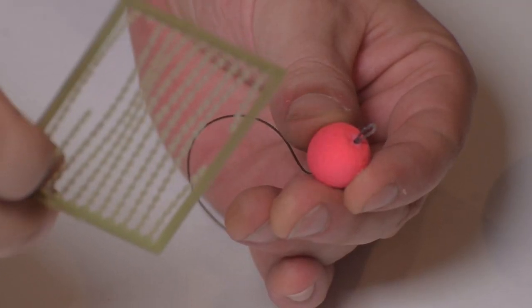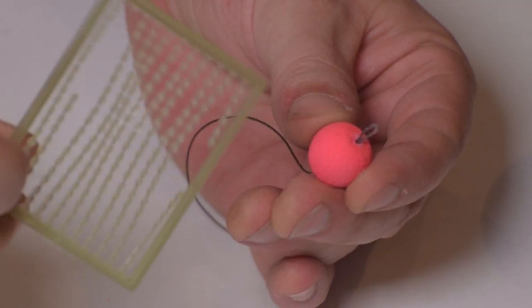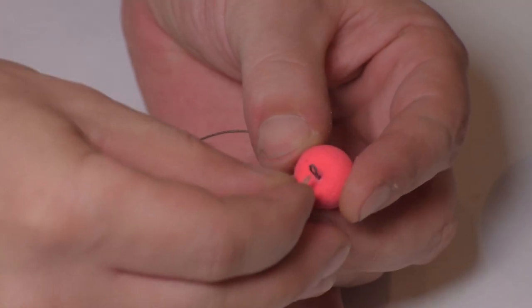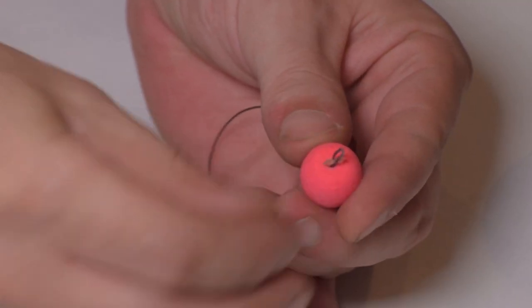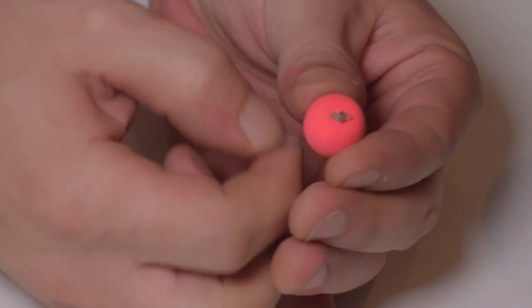And then we're gonna get one of these little tiny bait stops. Oh bait stops, where do thou go when I drop you in the dark? It is not in this dimension, for I cannot find you anywhere. And now we're gonna stick it through this hole and pull the line nice and tight.